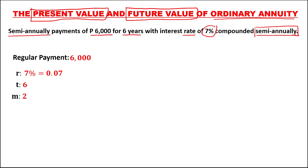For reference: if compounded quarterly, M is equal to 4; compounded monthly, M is equal to 12; and compounded annually, M is equal to 1. For the number of periods, that's M times the time: 2 times 6, so the number of periods N is equal to 12.